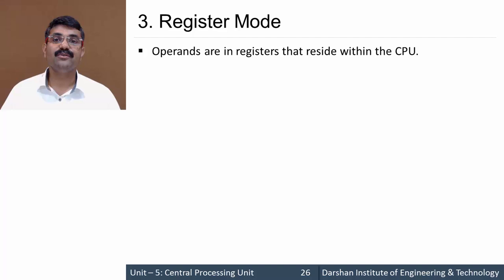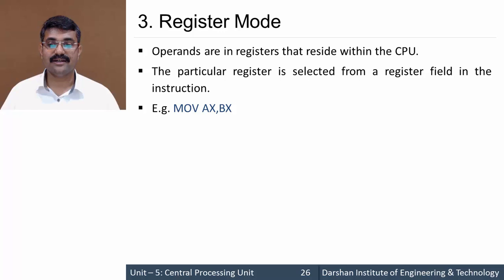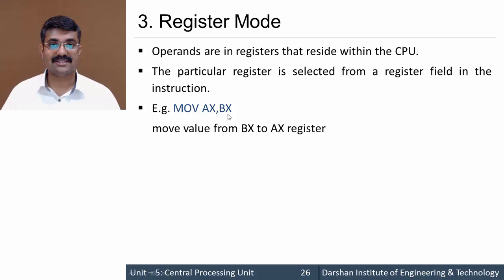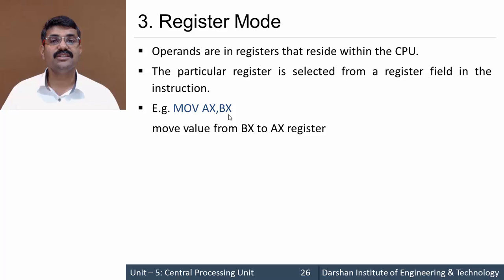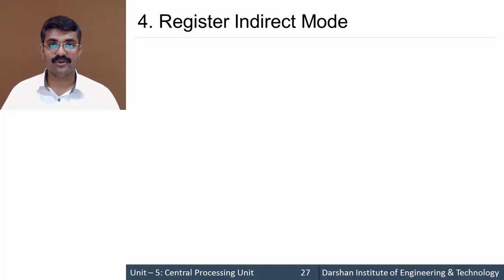The third addressing mode is register mode. In register mode the operand is a register. Unlike immediate mode where the operand was data itself, here the register contains the data. For example, MOV AX, BX — the content of BX would be transferred to AX. The operands are registers, so this is termed register mode.